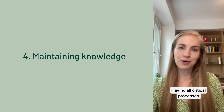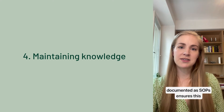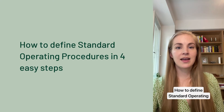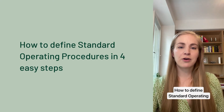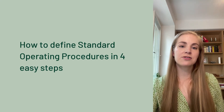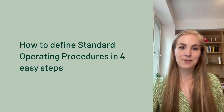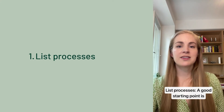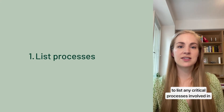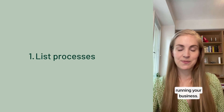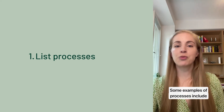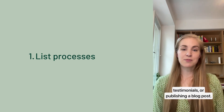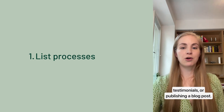Having all critical processes documented as SOPs ensures this valuable information stays safe. Now let's talk about how to define standard operating procedures in four easy steps. First, list processes. A good starting point is to list any critical processes involved in running your business. Some examples of processes include onboarding new clients, drafting business proposals, processing testimonials, or publishing a blog post.